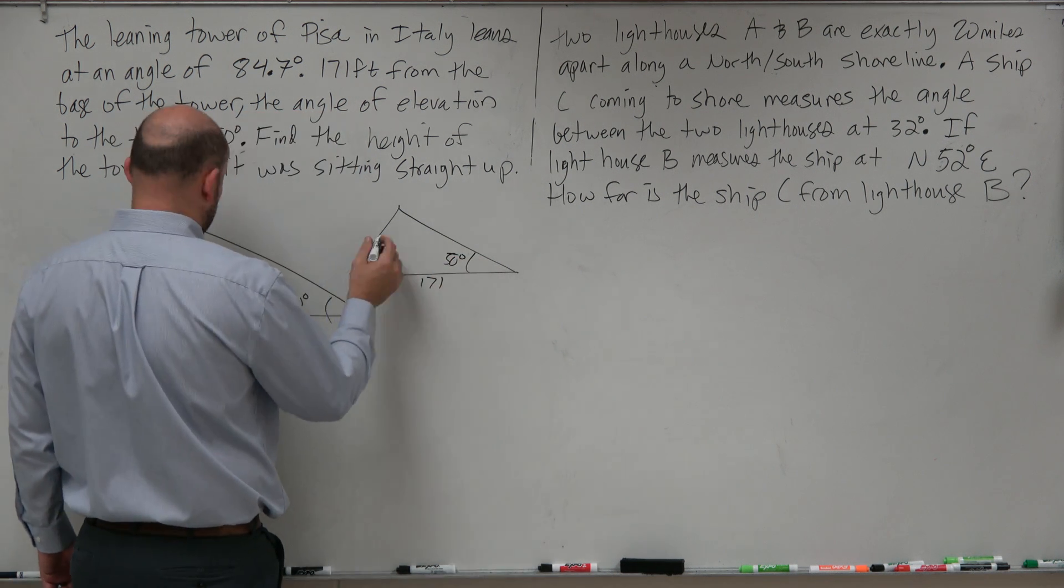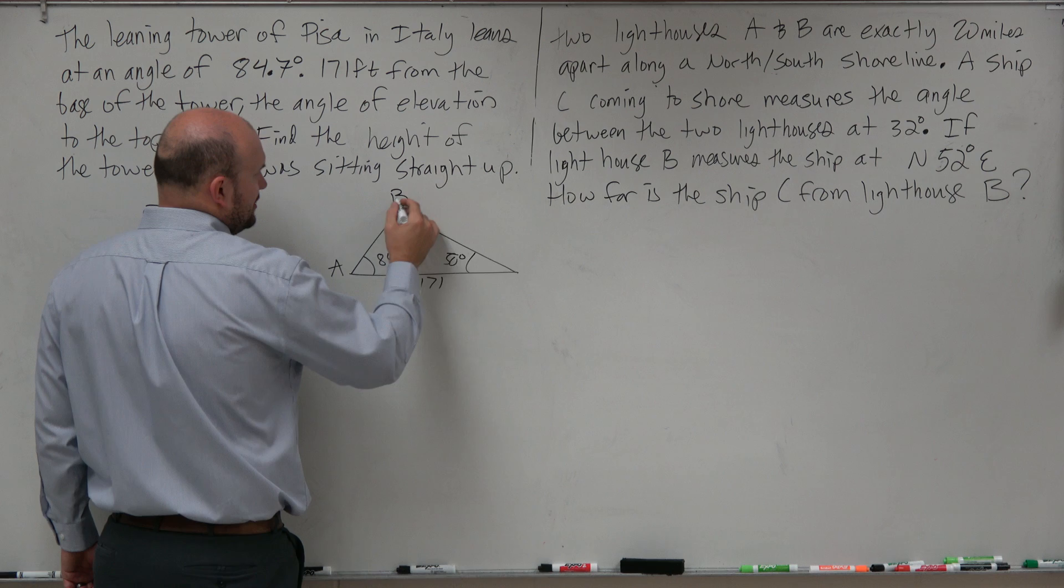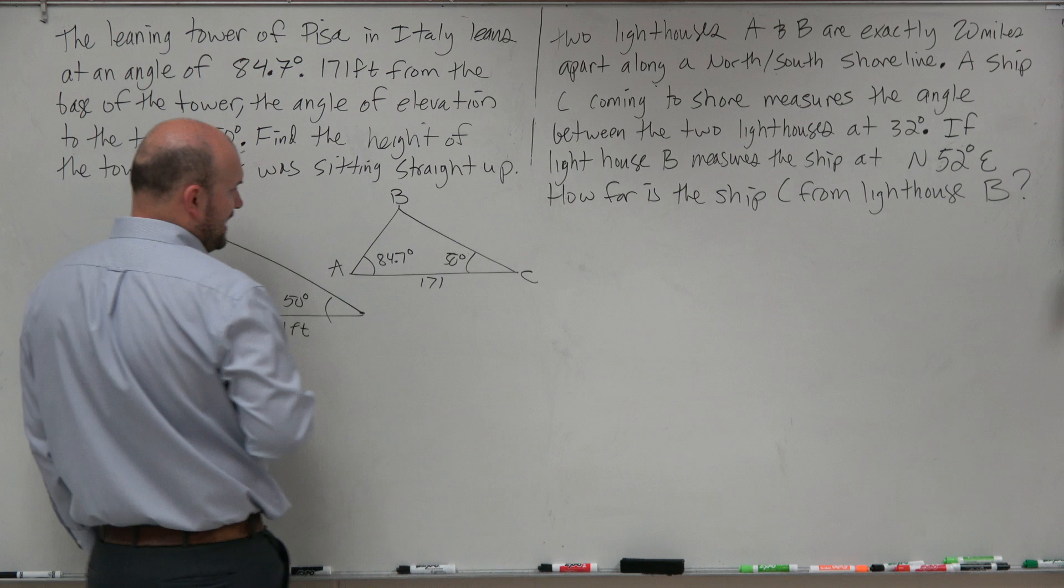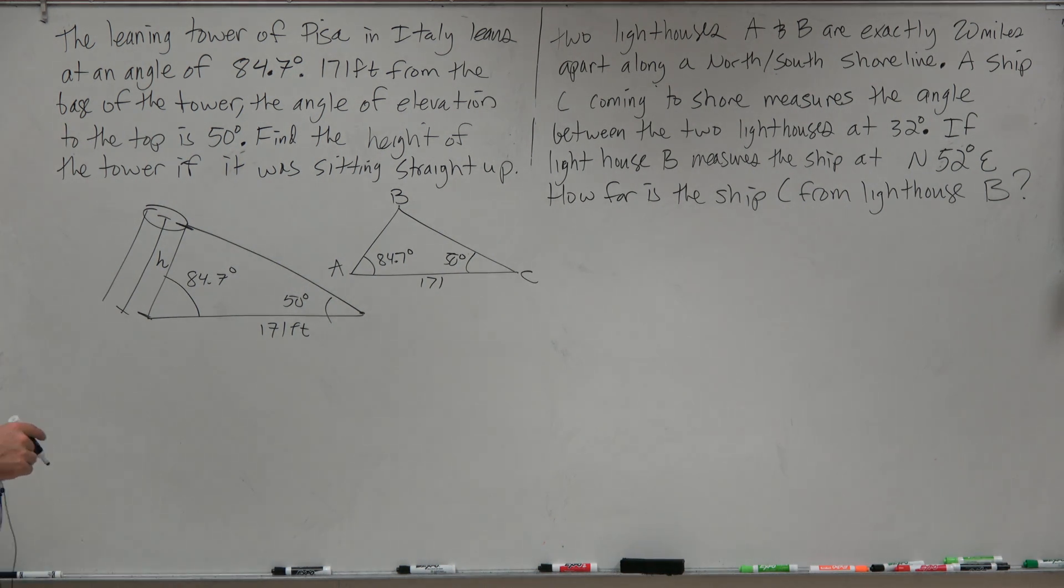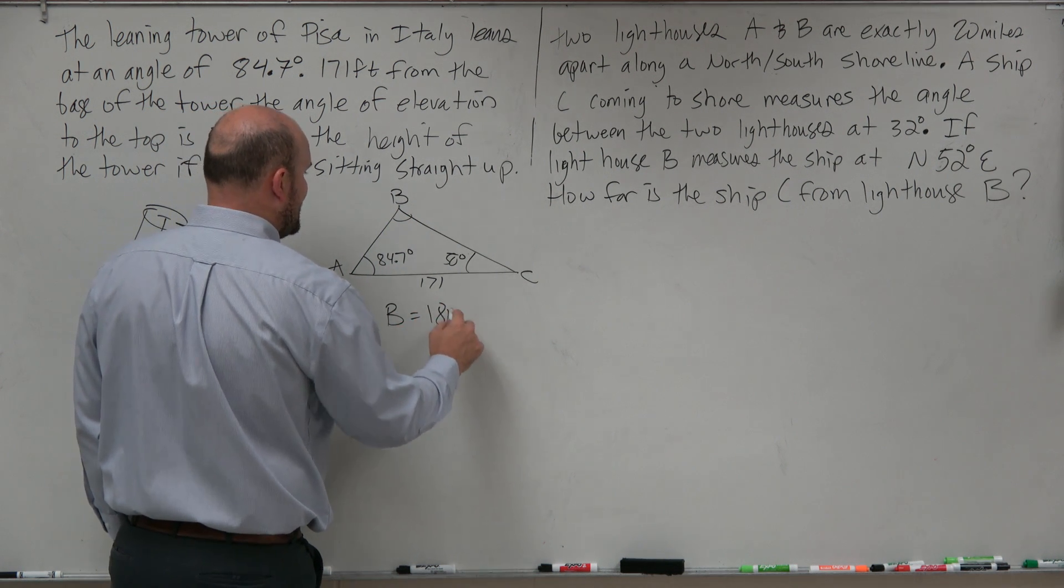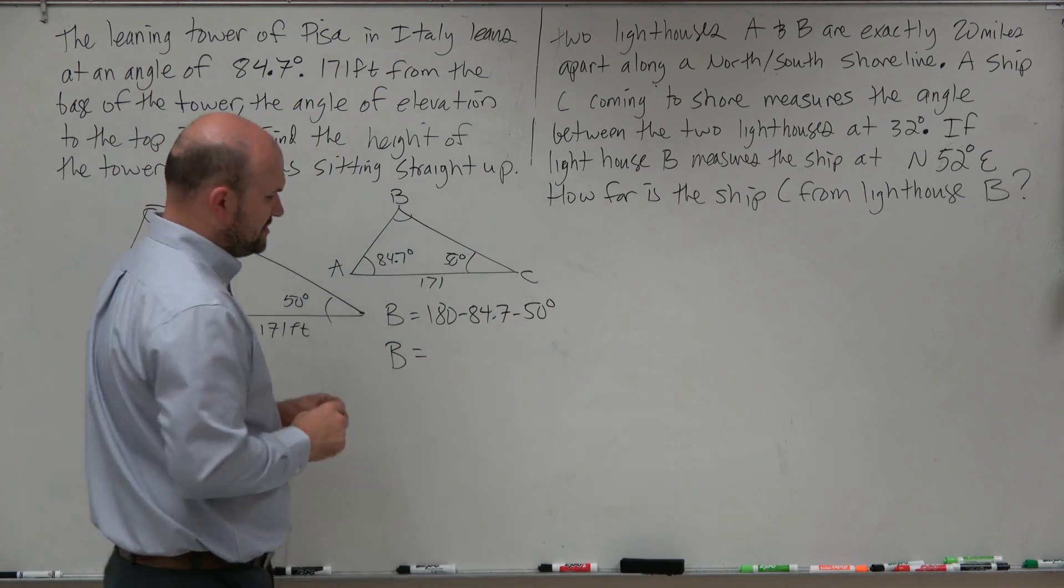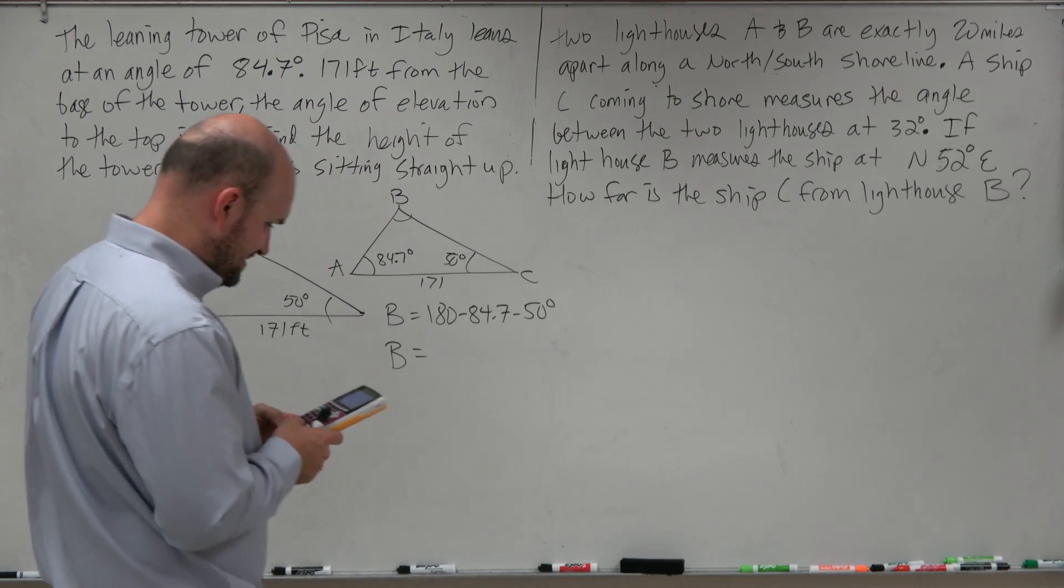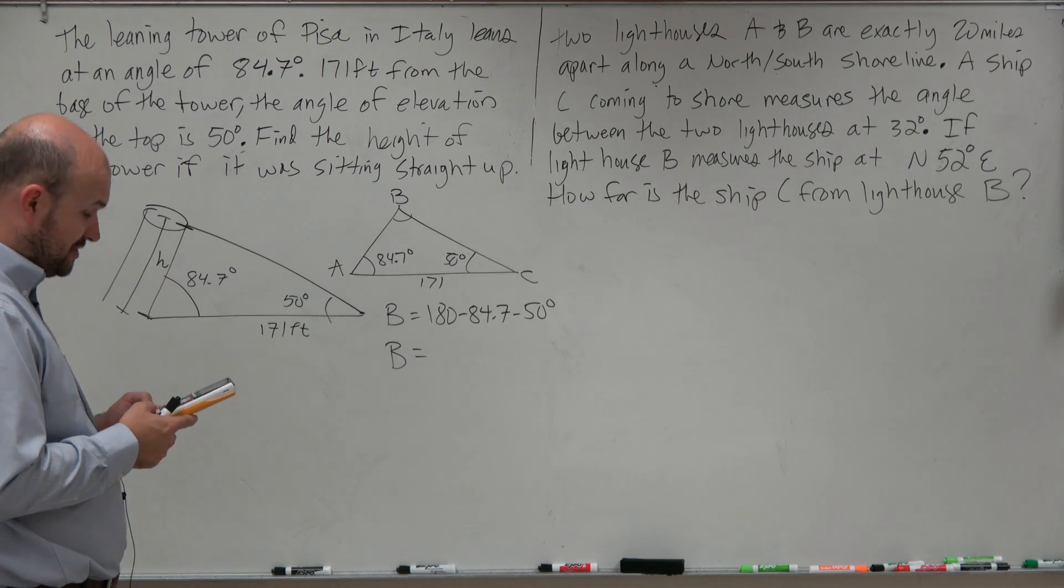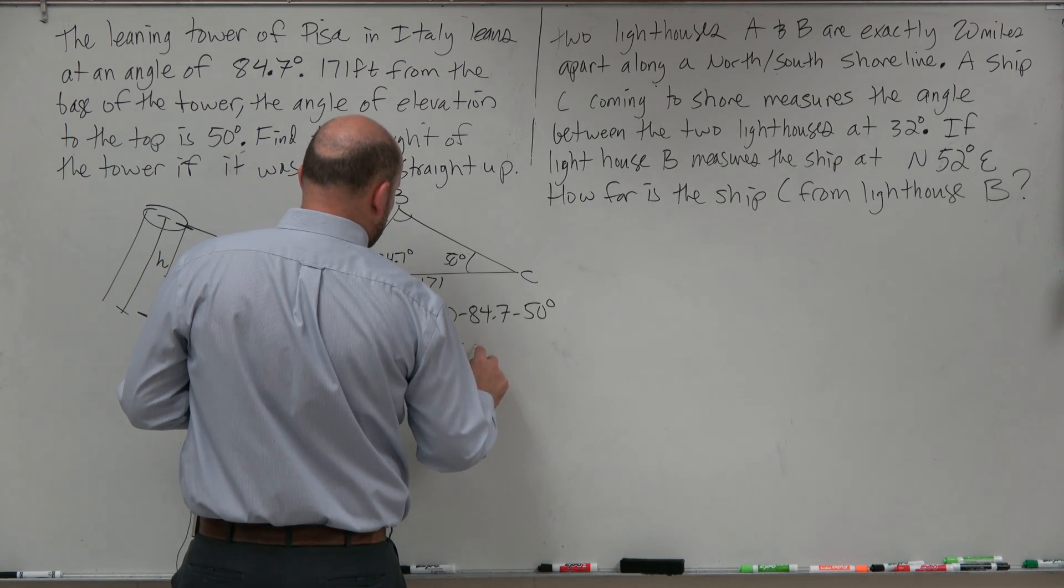And usually what I like to do is start to label everything that I have. And usually when I have an oblique triangle, I'll just use a very standard labeling, just A, B, and C. So therefore I know angle A is 84.7, angle C is 50 degrees. I can figure out angle B by saying angle B is 180 minus 84.7 minus 50 degrees. So angle B is equal to, even though I could probably do this in my head, I don't want to make the mistake, and I might as well just make sure that I have everything done correctly. And I get 45.3, so 45.3 degrees.